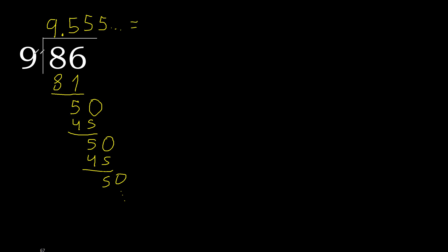86 divided by 9 equals 9, and after the decimal point, 5 repeating. Therefore the answer is like this.